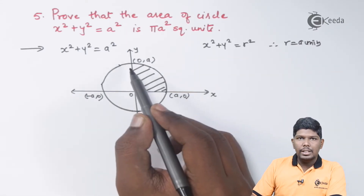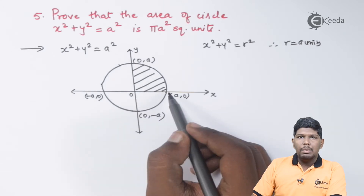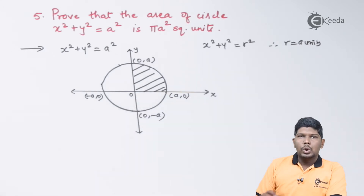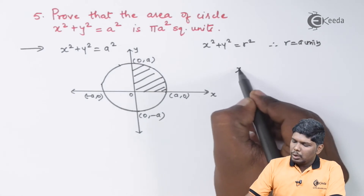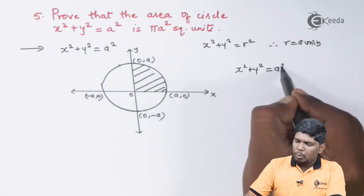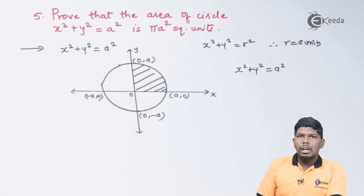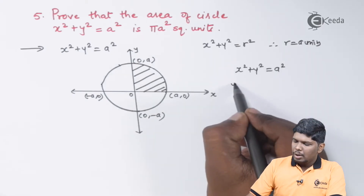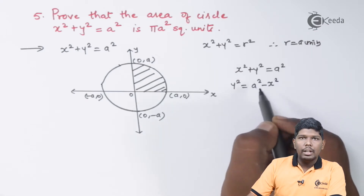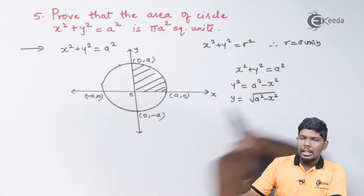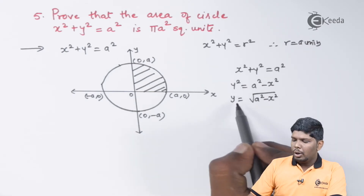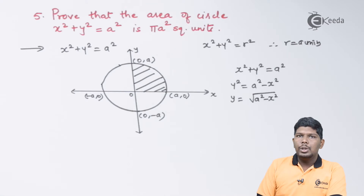For this region, the minimum value of x is 0 and the maximum value is a, so the limits of x are from 0 to a. The next step is to find the value of y from the given curve x² + y² = a². Solving for y: y² = a² − x², so y = √(a² − x²).